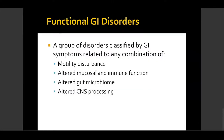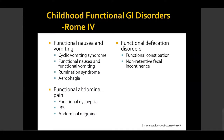Now let's define functional GI disorders. They are a group of disorders with GI symptoms related to a combination of factors including motility disturbance, altered mucosal and immune function, alteration in the gut microbiome, and unaltered CNS processing. The autonomic nervous system even affects tight junctions and gut permeability, potentially causing the so-called leaky gut with increased bacterial permeability, inflammation, and symptoms.